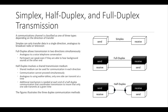Full duplex allows transmission in two directions simultaneously and is analogous to a voice telephone conversation where participants can speak and hear background sounds at the other end. A half duplex mechanism involves a shared transmission medium that can be used for communication in each direction, but not simultaneously — similar to walkie-talkies where only one side can transmit at a time. An additional coordination mechanism is needed at each end of a half duplex connection to ensure only one side transmits at a given time, as with walkie-talkies and ham radios.